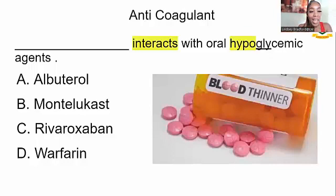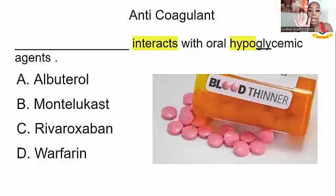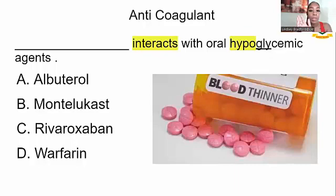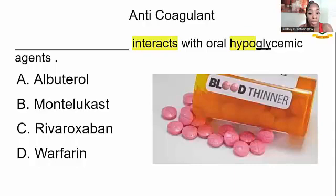Anticoagulants are medications that stop the coagulation of blood — meaning they stop the blood from forming blood clots, which can be very harmful. People take anticoagulants, or blood thinners, to thin the blood. This question asks: which anticoagulant interacts with oral hypoglycemic agents? Breaking down the term: 'hypo' means low, and 'gly' means sugar — so oral hypoglycemic agents relate to diabetes.